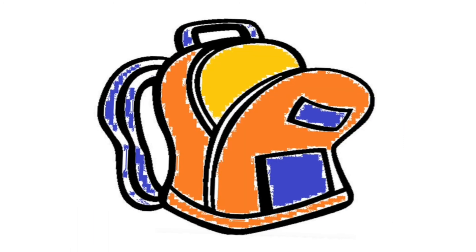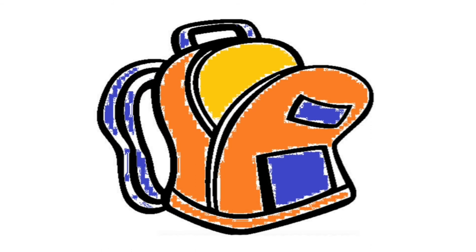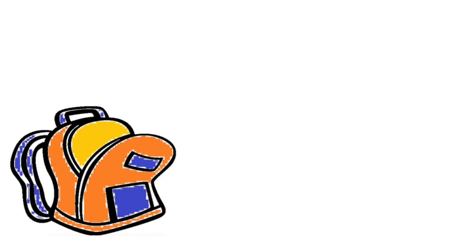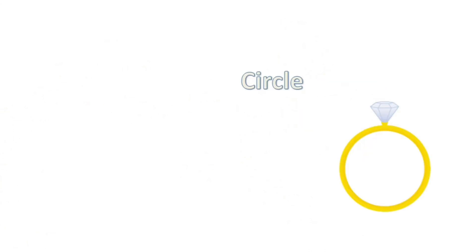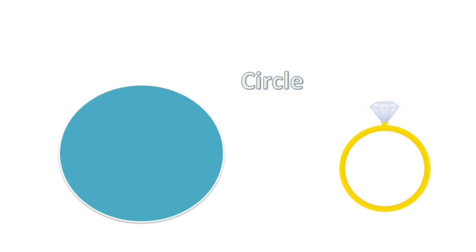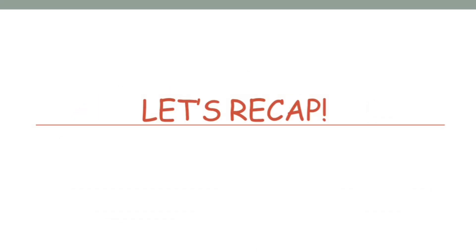Let's see what shapes are in the bag. A ring. What shape does a ring look like? A circle. Okay, so let's recap what we learned in this video.